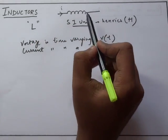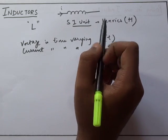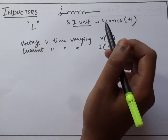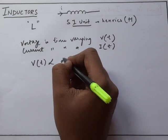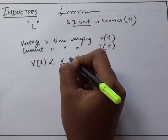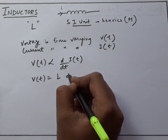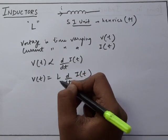For voltage across an inductor, we have a definition: the voltage across an inductor is proportional to the rate of change of current passing through it. From this definition we can write an equation: voltage is directly proportional to dI(t)/dt. Here L is the constant of proportionality.